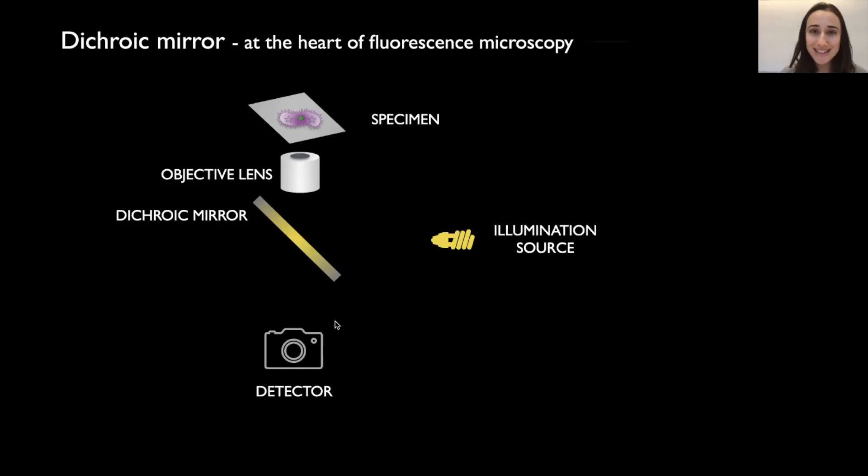So where does the dichroic mirror sit in our microscope? So for example, here we are depicting an inverted microscope because we are looking at our sample from below. So we have our sample of interest, the objective lens that sits underneath and the dichroic mirror sits at 45 degrees underneath the objective. And therefore, this dichroic mirror will be able to reflect the wavelengths of light that we are going to use to excite our sample, which then the objective collects the fluorescence and the dichroic mirror lets these wavelengths pass through, just the fluorescence, and discards the illumination wavelengths to the detector.